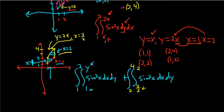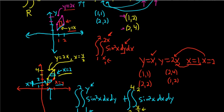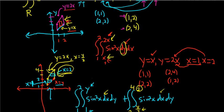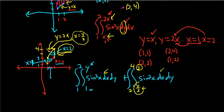The key idea is: whenever you have dy dx, you always draw a vertical rectangle, and the top function is the upper limit while the bottom function is the lower limit — always top minus bottom. Whenever you have dx dy, you always draw a horizontal rectangle with functions of y. The rightmost piece goes up top, and the leftmost piece goes on the bottom, as you can see here.